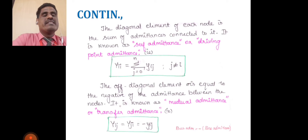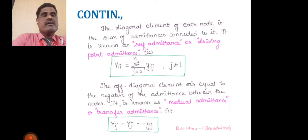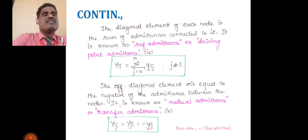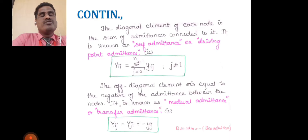y_ij represents different nodes — 1 to 2, 2 to 3, 3 to 2, 3 to 1 — meaning the connecting nodes are different. For self-admittance, the individual node is connected to various branches.